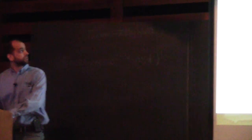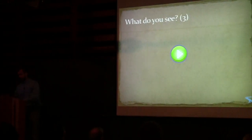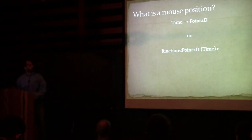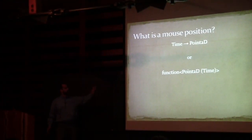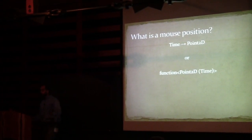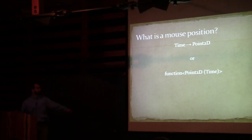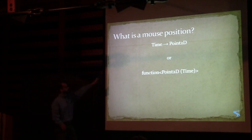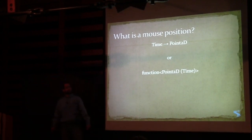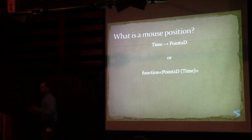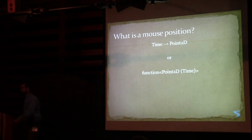That, right there, is the basis of functional reactive programming — a function from time to Point2D. This is the mathematical notation for the type. We can think of it as a std::function that takes in a time and returns a Point2D.